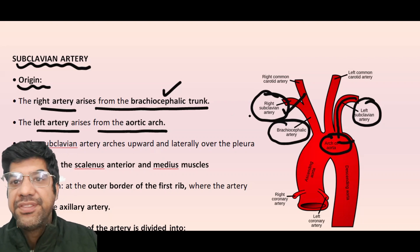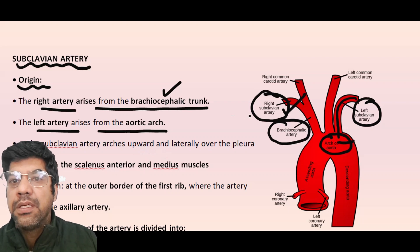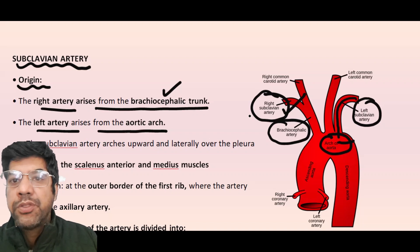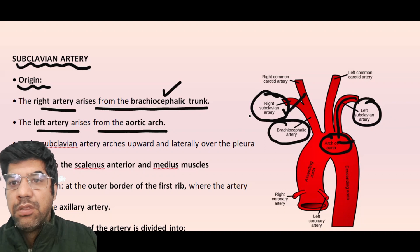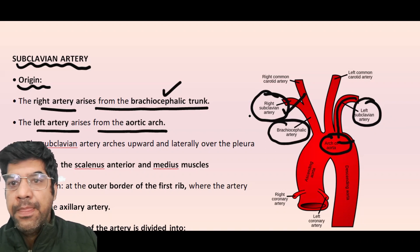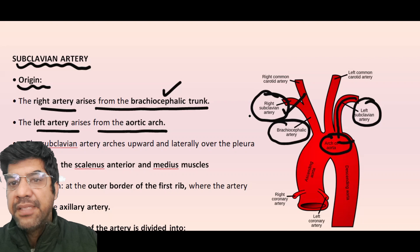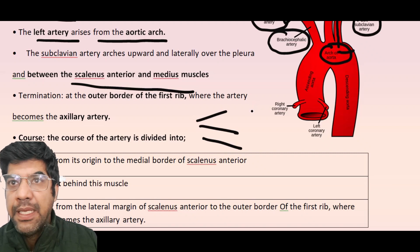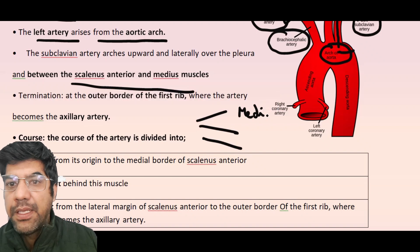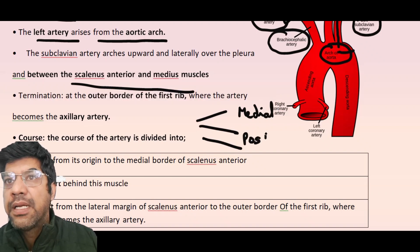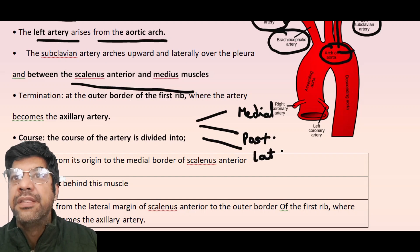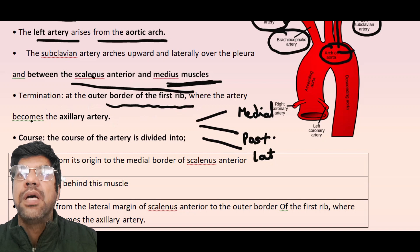The subclavian artery takes a distinct path, arching laterally from the sternoclavicular joint to the outer border of the first rib. The scalenus anterior muscle plays an important role in shaping the course of the subclavian artery. As the artery passes through the neck, the scalenus anterior muscle crosses it anteriorly, dividing it into three parts. The artery is terminated at the outer border of the first rib, where it becomes the axillary artery.